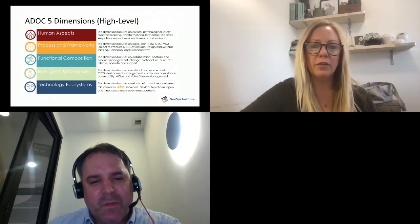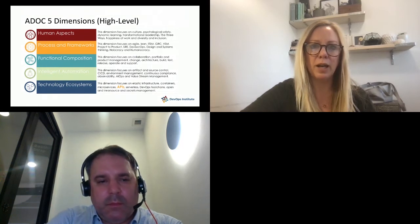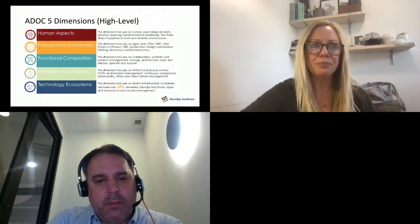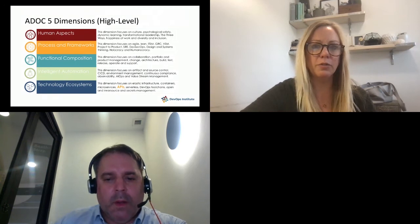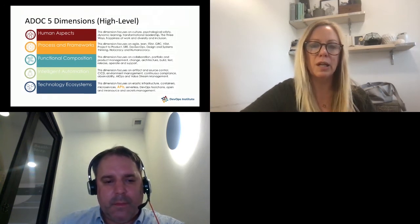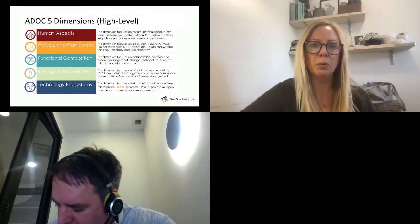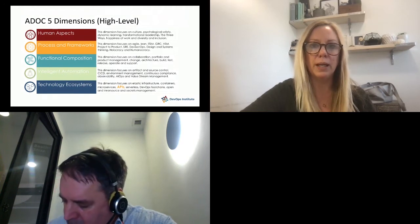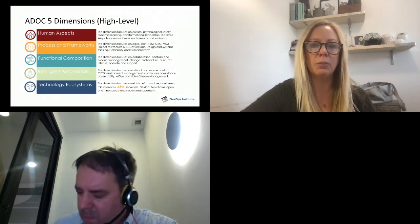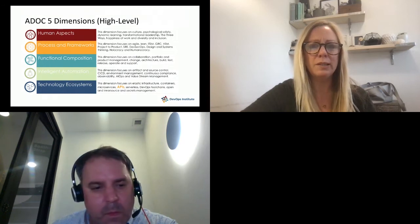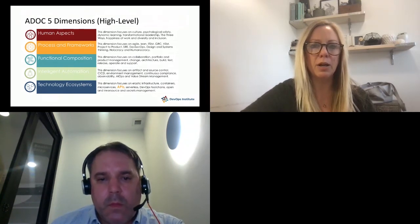In functional composition, we look at the value stream end to end — where ideas start, how they pass through product development, how we manage change around them, and how we architect. The link to APIs here is very clear. The concept of a monolithic application is not particularly helpful for what we're trying to do in DevOps. What we want is small parts so we can build, test, and deploy very quickly, which requires smaller components. This is a very close link to why DevOps requires loosely coupled applications and why microservices and APIs are so important. Culturally, we also focus on open source and inner source — the ability to share and collaborate on APIs becomes very important in DevOps.